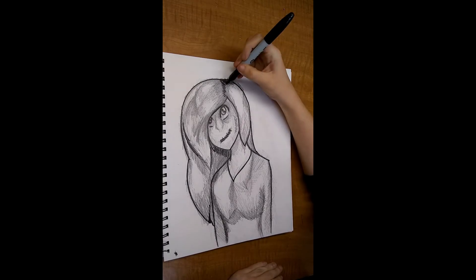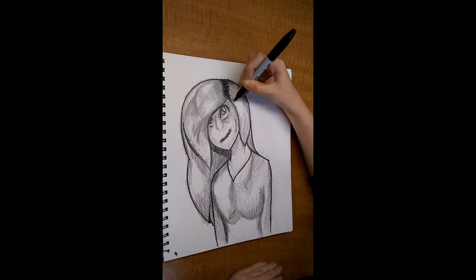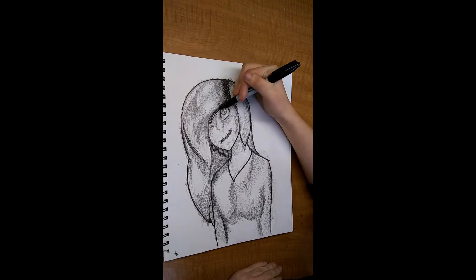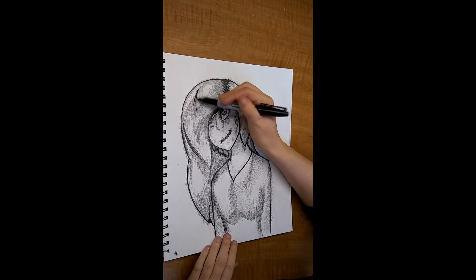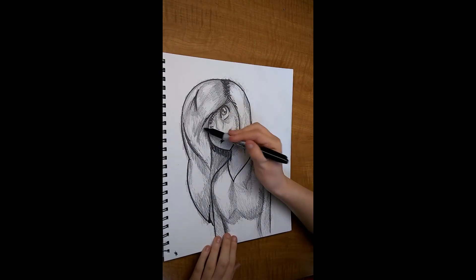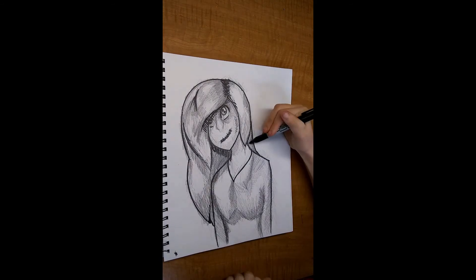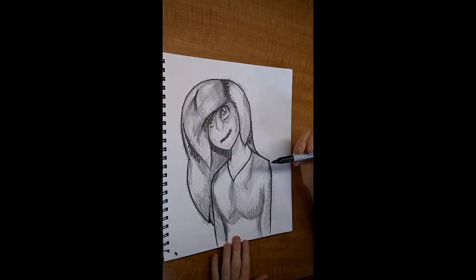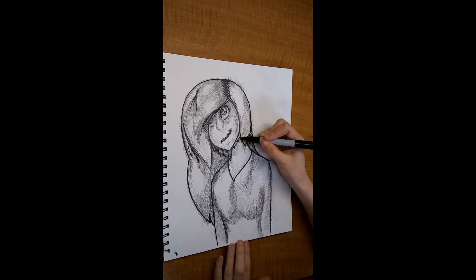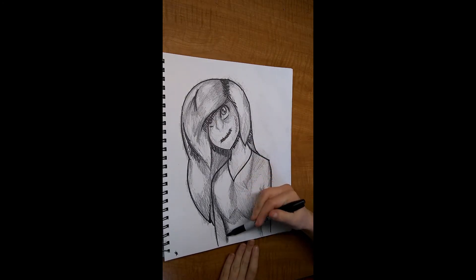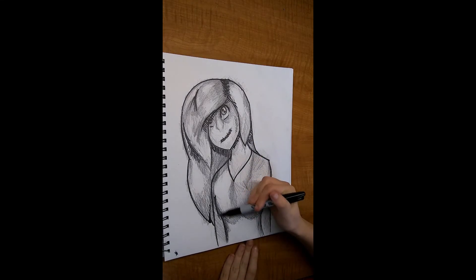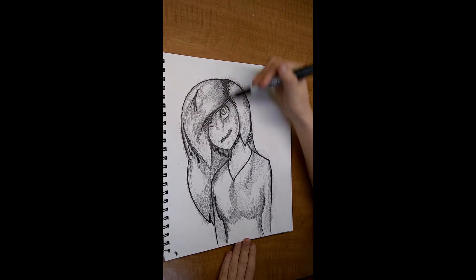Here I did some cross hatching, is that what it's called, cross hatching? With the Sharpie to kind of emphasize where I lost some of the shadow. And I think the cross hatching helped. Maybe in some places I overdid it, like underneath the neck, probably overdid it there.